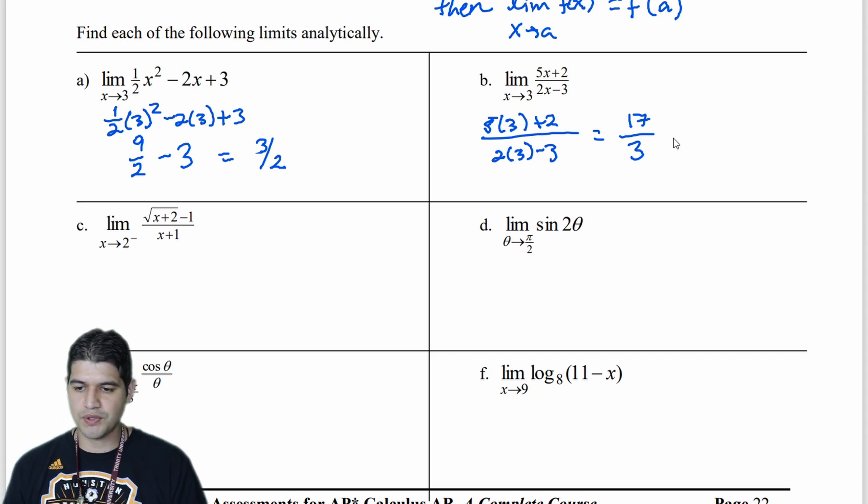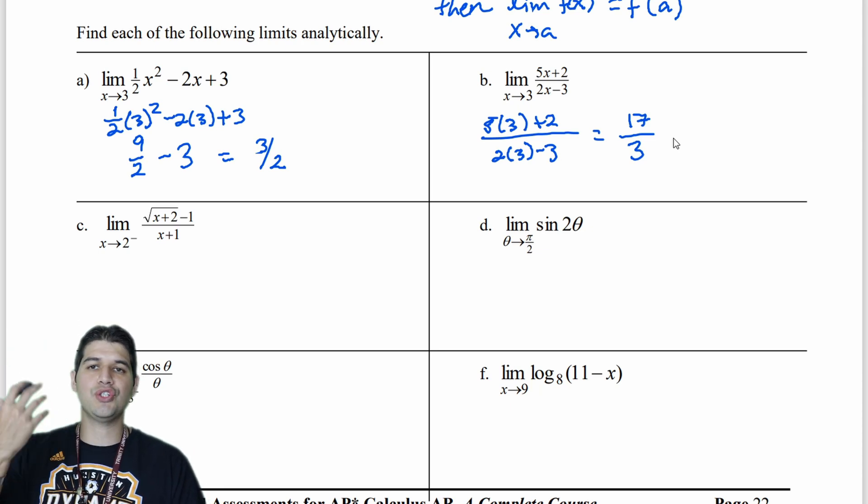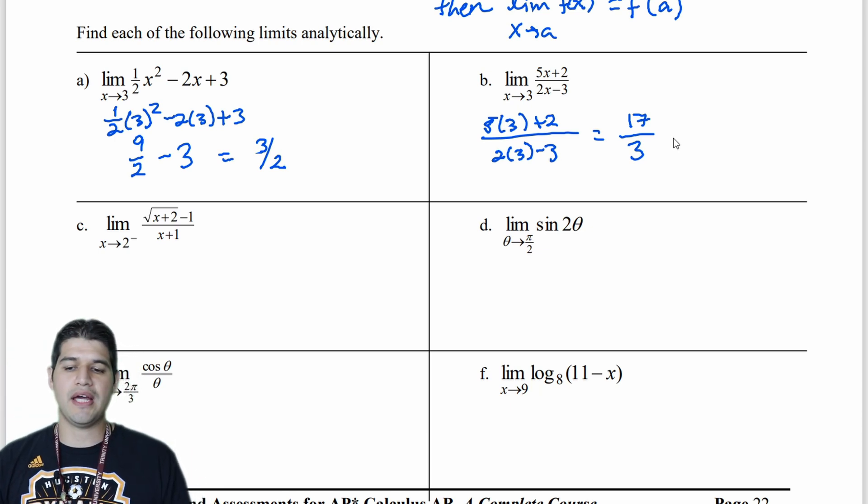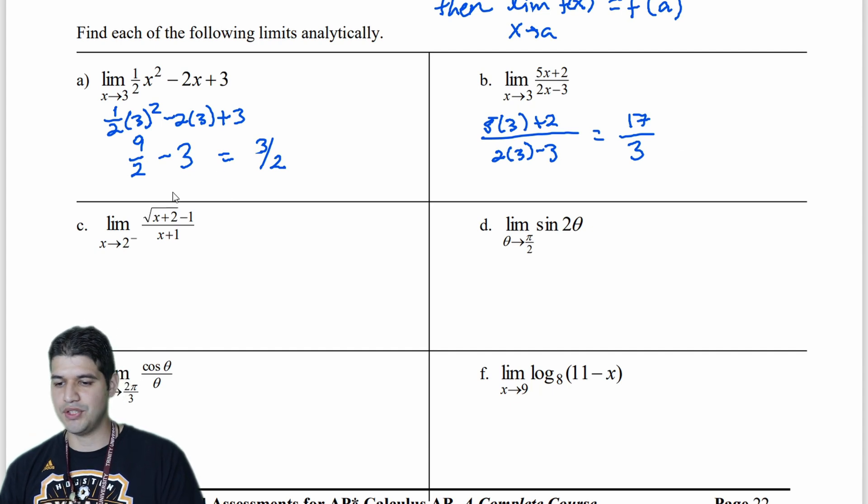And c, we got some square roots, but that's fine. And again, if you look at our table, even though this is saying 2 from the left side, it's not really going to matter. We can still go through this in the same way, just by substituting in that value.